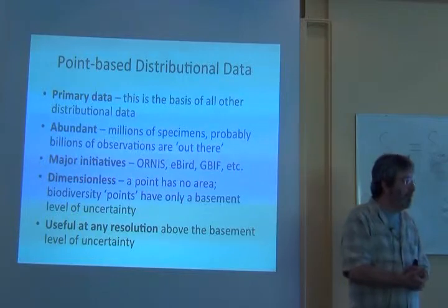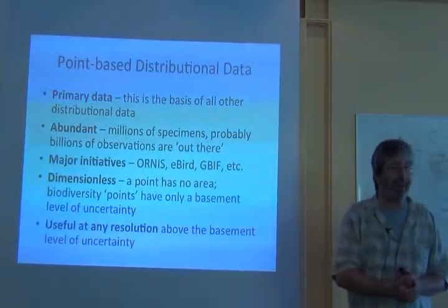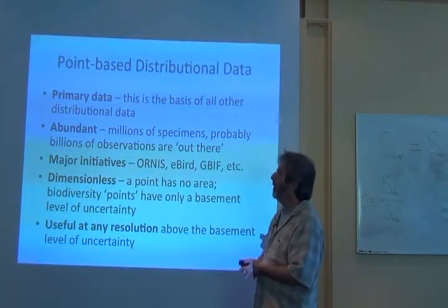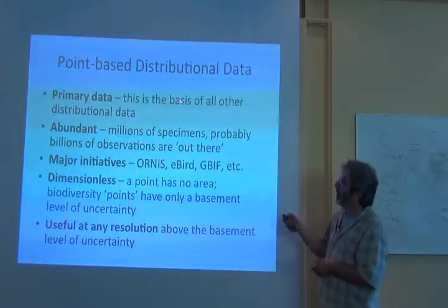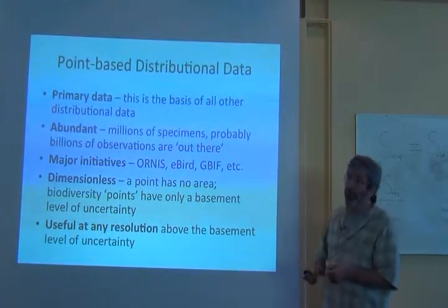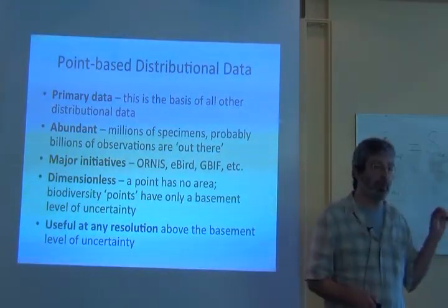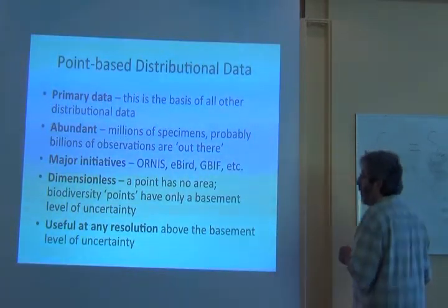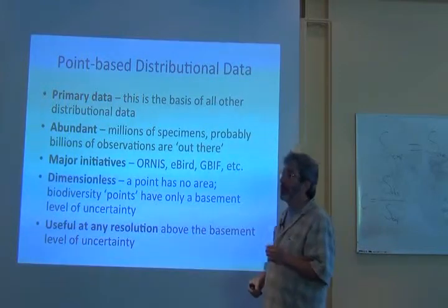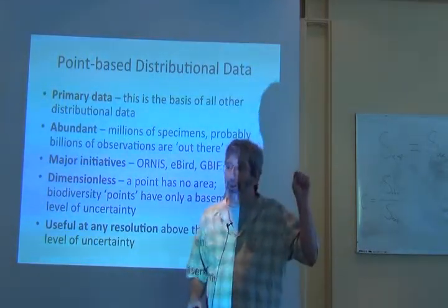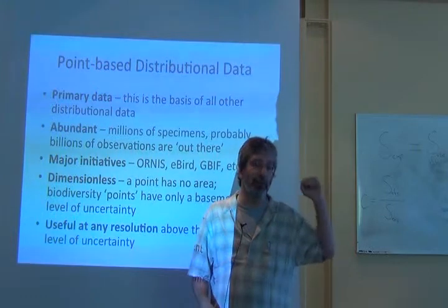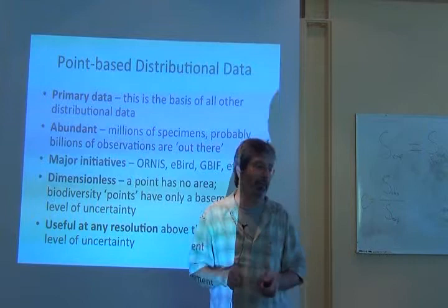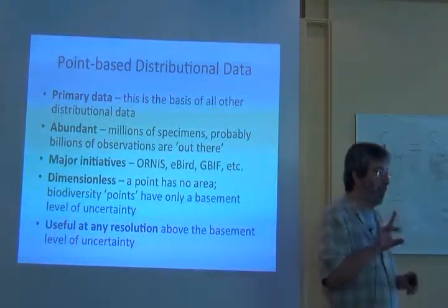So what we're after instead, and what we want to base essentially everything on, is primary biodiversity data. It's got to be in the form of points. They need to be primary in the sense that it is the direct result of an observation of an element of biodiversity. A primary biodiversity data point consists of linking a species or some taxon to a place at a point in time. Very simple — those three things.